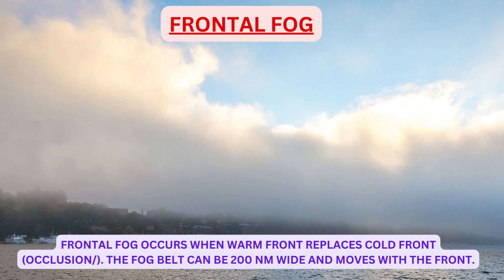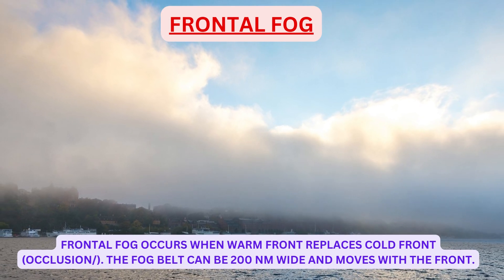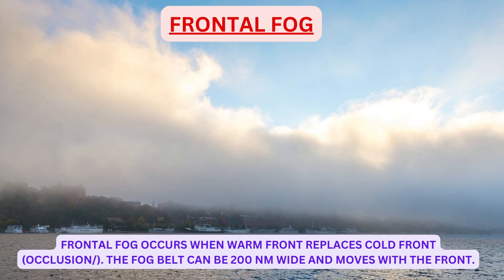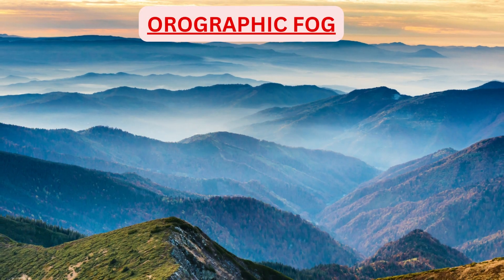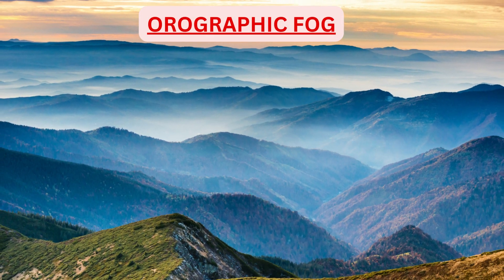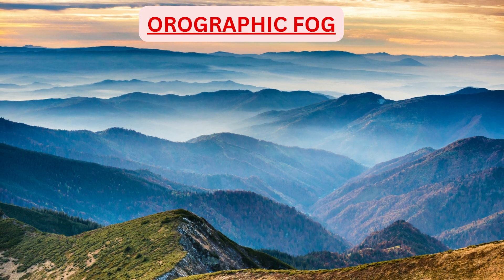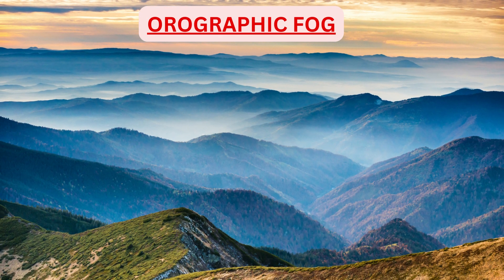Fourth is frontal fog. Frontal fog occurs when the warm front replaces the cold front, which is also called occlusion. In this kind of fog, the fog belt can be as wide as 200 nautical miles and will keep moving along with the movement of the front. Fifth is orographic fog, also called hill fog. This you must have seen at hill stations when the hilltops are covered with stratiform clouds in the morning hours.